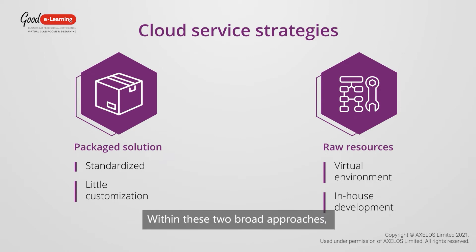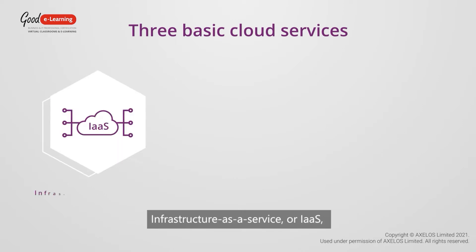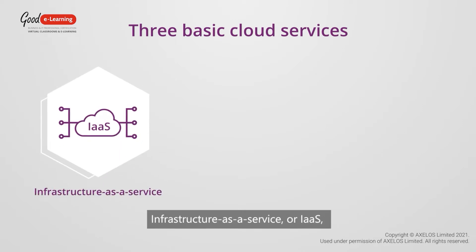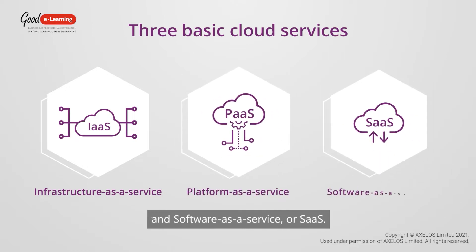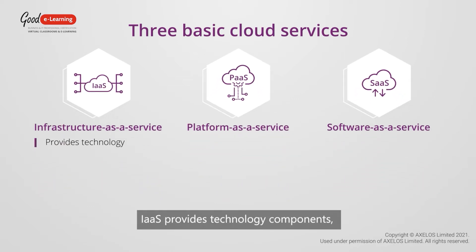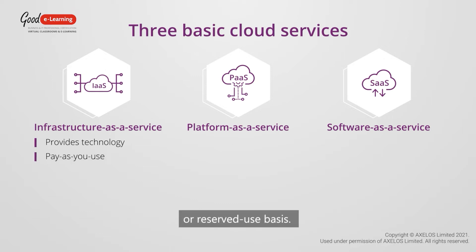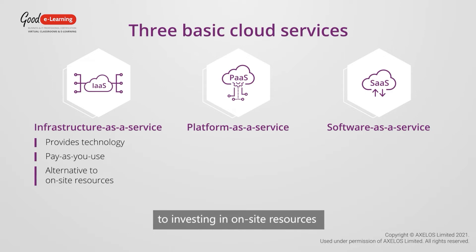Within these two broad approaches, consumers can choose from at least three basic types of cloud service: Infrastructure as a Service or IaaS, Platform as a Service or PaaS, and Software as a Service or SaaS. IaaS provides technology components such as standardized infrastructure services on a pay-as-you-use or reserved-use basis. For servers that can be provided using commoditized components in the cloud, IaaS provides an alternative to investing in on-site resources that are costly to purchase and maintain.